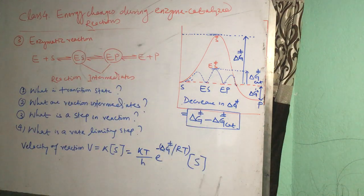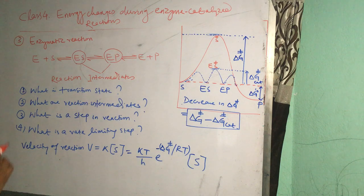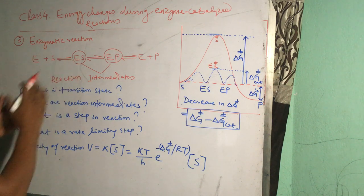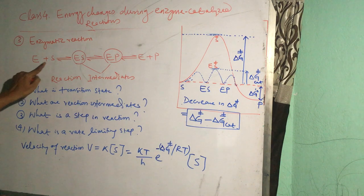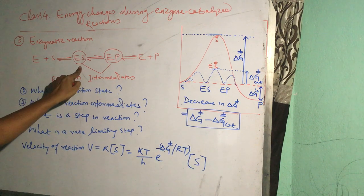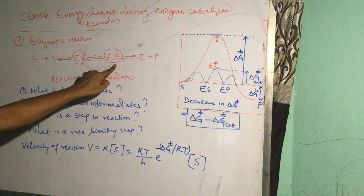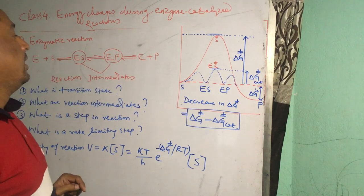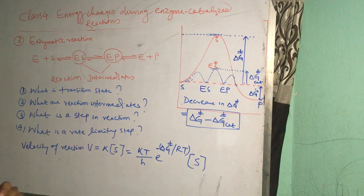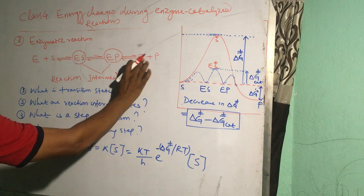Now we will see an enzymatic reaction. Suppose a reaction is going on in the presence of an enzyme. So enzyme binds to substrate forming an enzyme-substrate complex which is converted to enzyme-product complex and then it dissociates from the enzyme to form the free enzyme and the product.